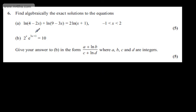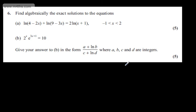This is question number 6. It says find algebraically the exact solutions to the equations. In part A, for 5 marks: the natural log of (4 minus 2x) plus the natural log of (9 minus 3x) is equal to 2 lots of the natural log of (x plus 1), where x is between minus 1 and 2.